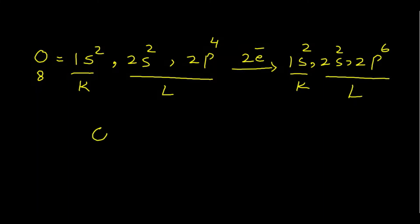After gaining two electrons, oxygen's electronic configuration becomes 1s² 2s² 2p⁶ — two electrons in the K shell and eight in the L shell. Its octet is now complete and it becomes stable. Oxygen becomes a dinegative ion, O²⁻, known as the oxide ion.